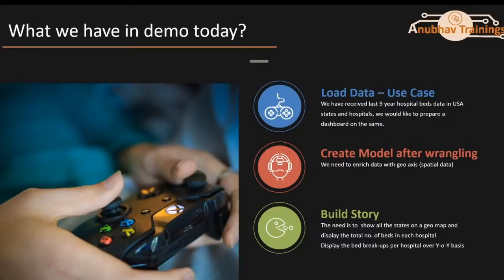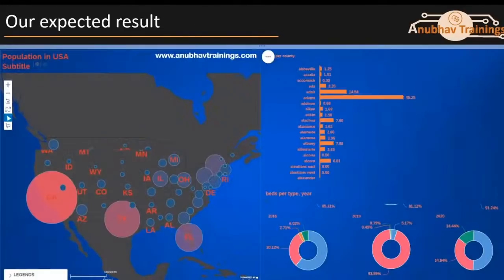It is mandatory to create a data model before using data in any story or dashboard. The model is the foundation for any story, containing the processed data that is finally usable by stories. We need to show all the states on the geo map, display the total number of beds in each county or hospital, and show the breakup of beds on a year-on-year basis in each hospital. Let's first see our expected result — this is how it is going to look.